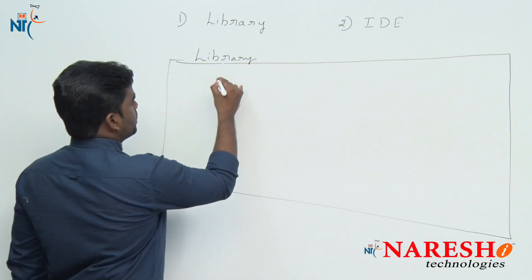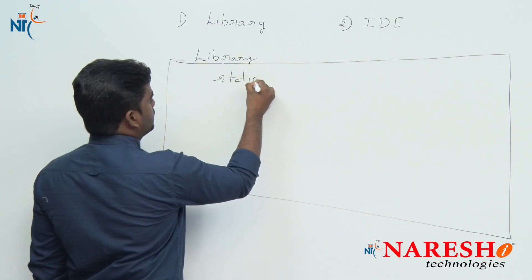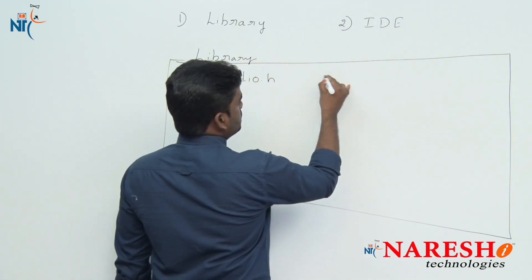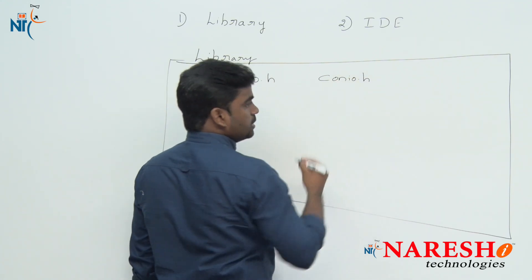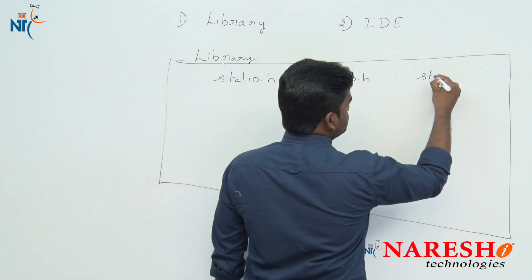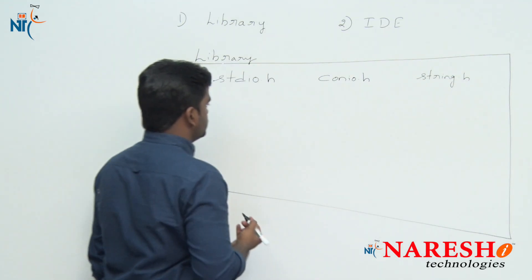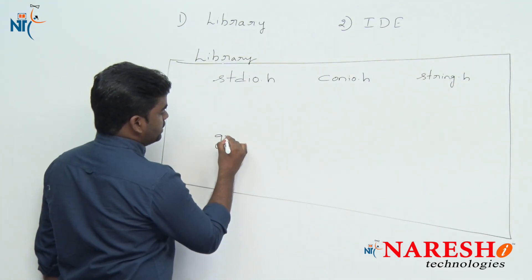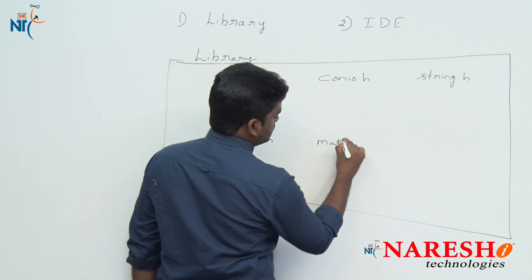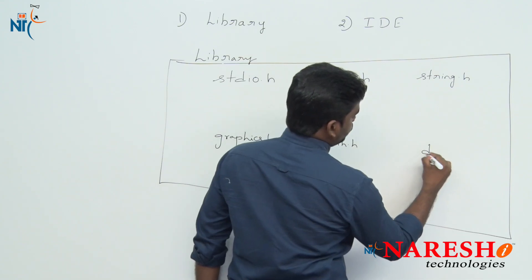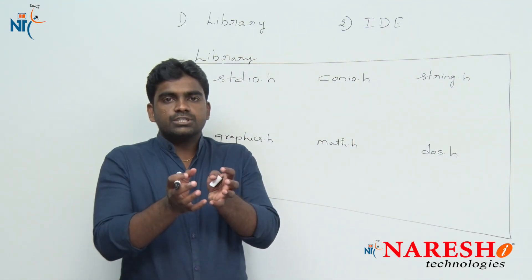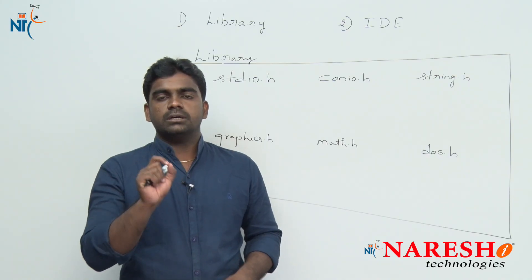Some of the header files are: stdio.h — standard input output library; conio.h — console input output library; string.h; graphics.h; math.h; and dos.h. Many header files are present. A collection of header files is called the C library.